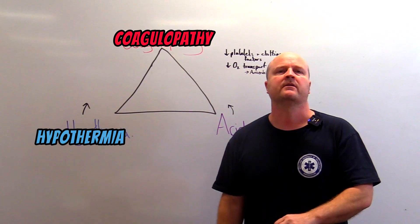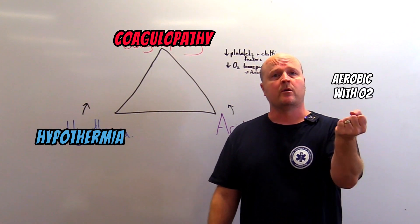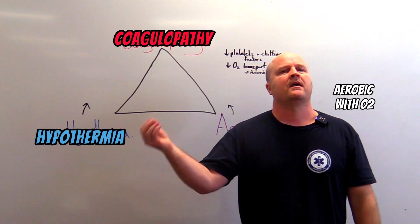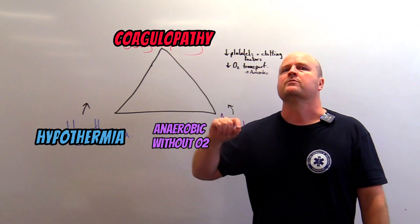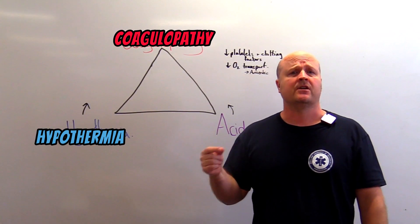If we can't transport enough oxygen this is gonna switch us from aerobic metabolism to anaerobic metabolism. If we use anaerobic metabolism because we're running out of oxygen it doesn't generate as much heat.